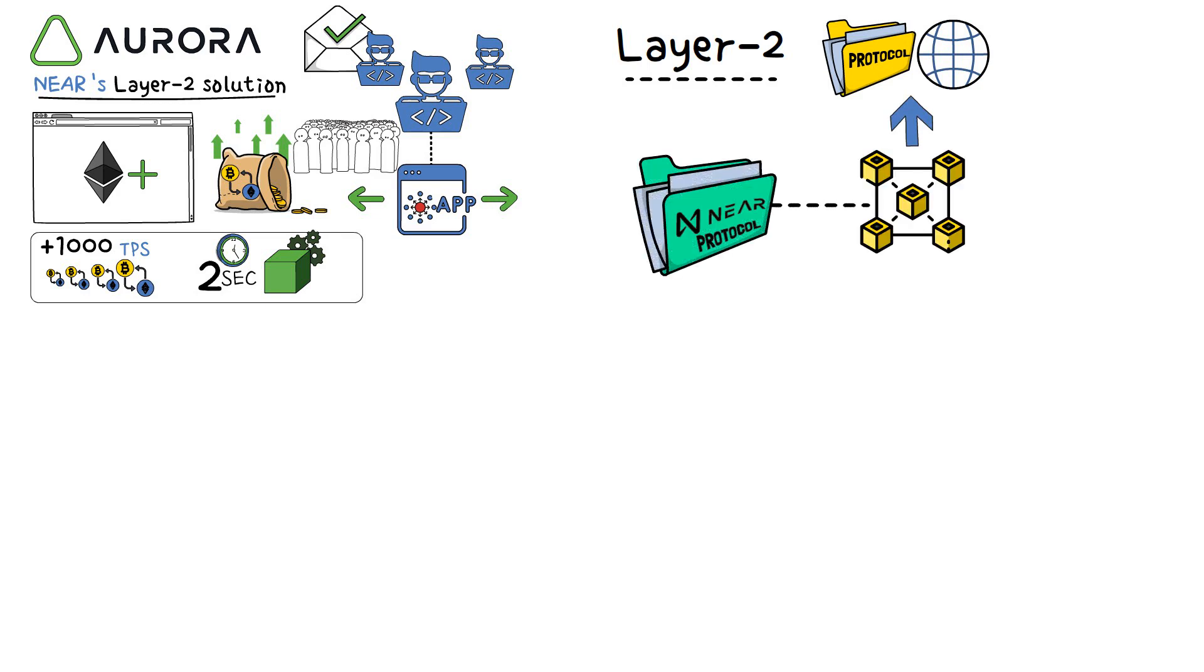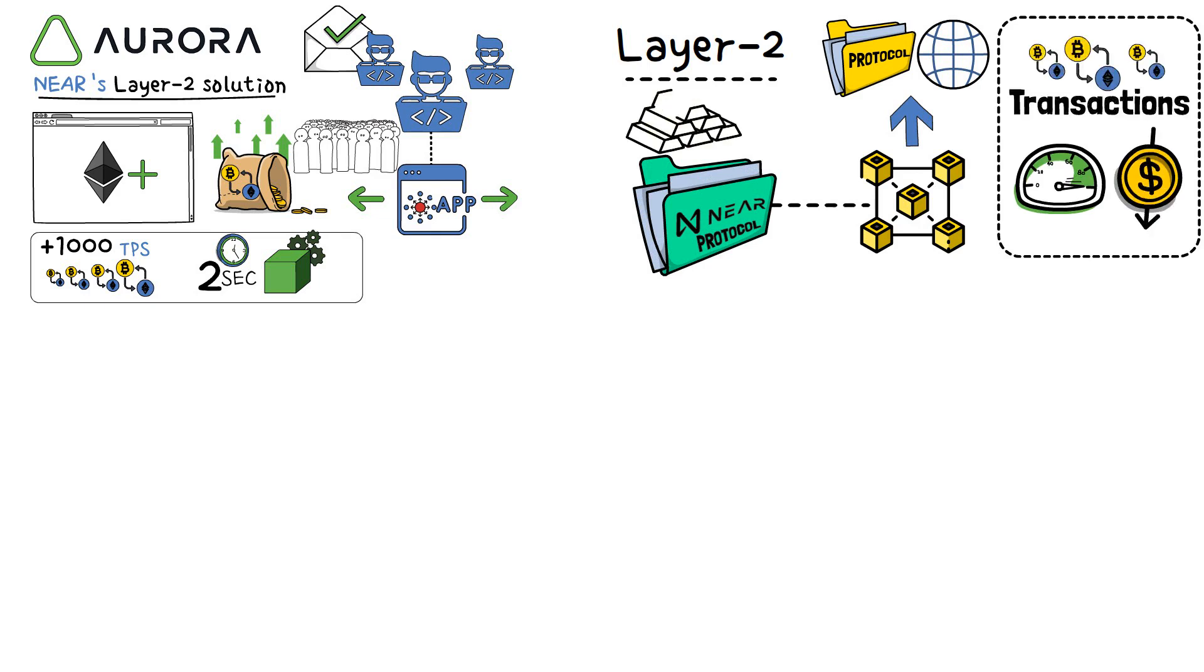Layer 2 refers to a secondary protocol or network built on top of the primary blockchain, in this case, the NEAR protocol. Layer 2 solutions enable faster and cheaper transactions, making them valuable for addressing scalability issues.